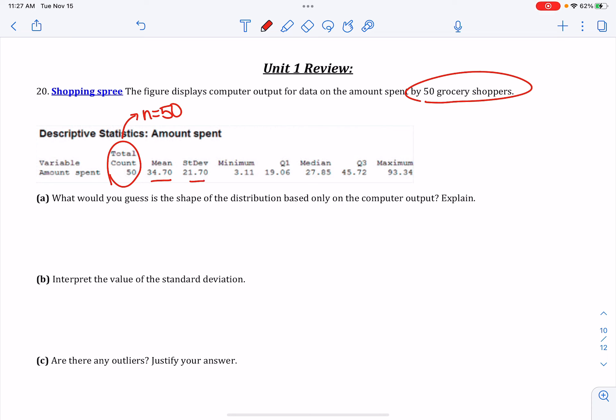We've got our mean, standard deviation, and then again, our five-number summary, which can also be represented by a box plot, right? So what would you guess is the shape of the distribution based only on the computer output? And be able to explain.